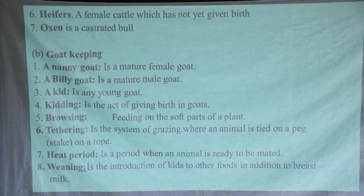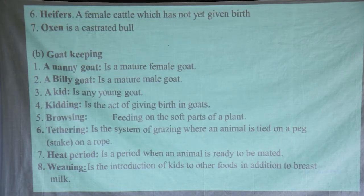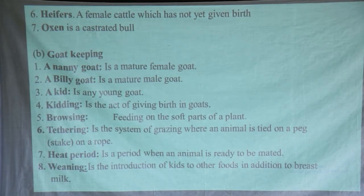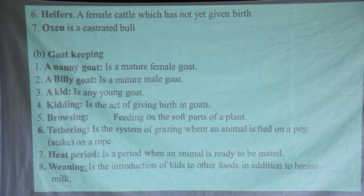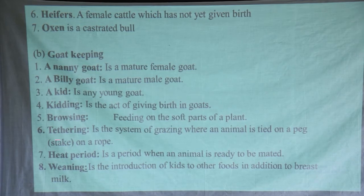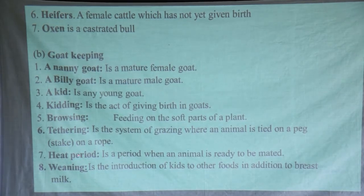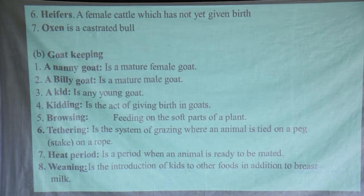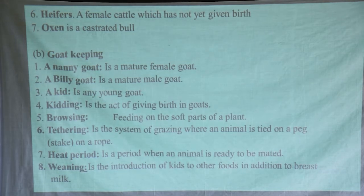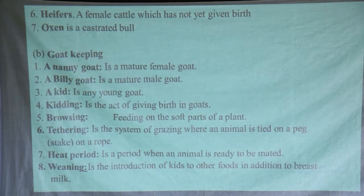Browsing in animals simply means feeding on soft parts of a plant — this commonly happens with goats when they are feeding. Then tethering: this is a system of grazing where an animal is tied on a peg, which can be called a stake, on a rope. This is very common in areas where, for example, somebody has one goat — they tie the goat or cattle on a peg. That is called tethering. The heat period is when an animal is ready to be mated; it will be showing signs of mating.